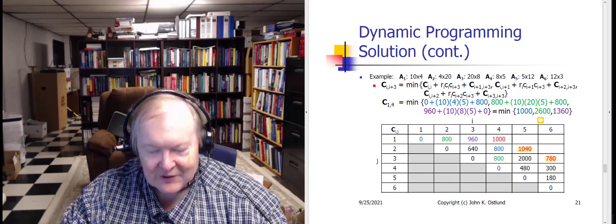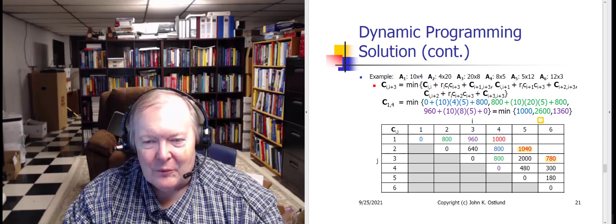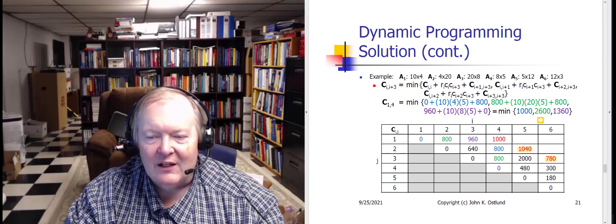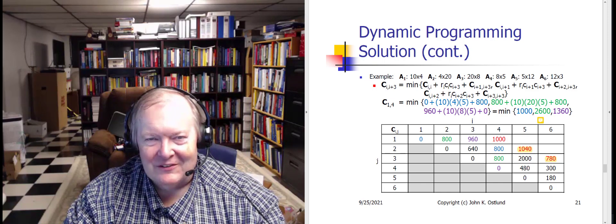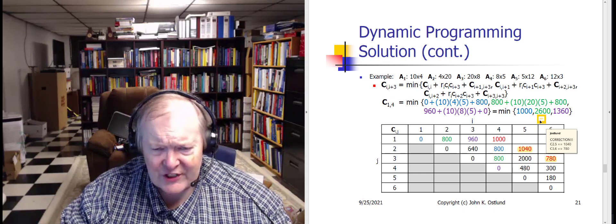We go through similar bookkeeping to get values for C₂₅ and C₃₆. A correction is needed here: the original slides had an error from a spreadsheet mistake. The correct values are C₂₅ = 1040 and C₃₆ = 780, as shown in the revised lecture slides posted for this week. The logic and algorithm in the video are correct, but the specific numbers in rows 2 and 3 of the original table were not correct.